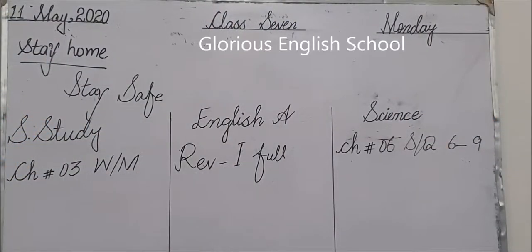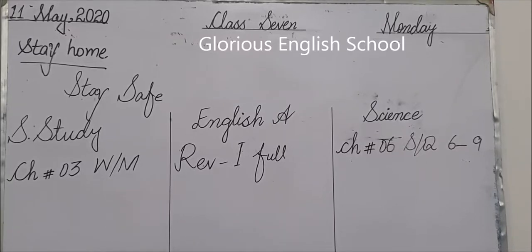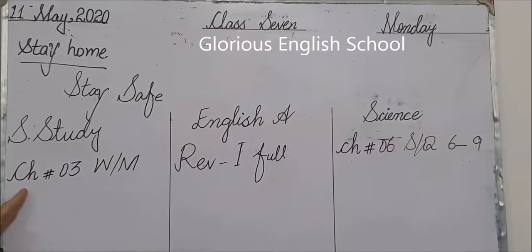Good morning. Stay home, stay safe. Today is 11th May 2020, Monday. I will explain the social study diary first. Today our social study diary is chapter number 3: main agricultural products of the Muslim world.